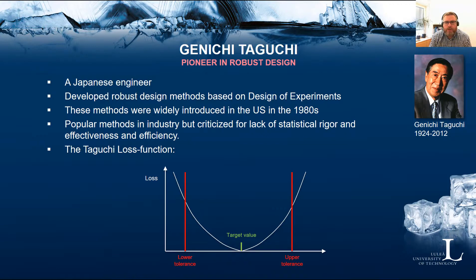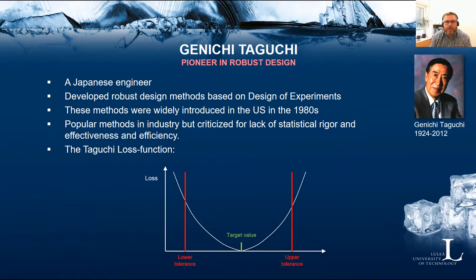Genichi Taguchi was a Japanese engineer who developed robust design methods based on design of experiments, which became very popular in industry. The methods were widely introduced in the US in the 1980s. While very popular, within the research community they have been criticized for lacking statistical rigor and efficiency, and sometimes for being ineffective. However, the research community does agree that the robust design problem itself is a very important area in industry.